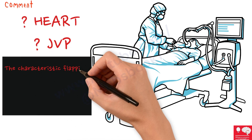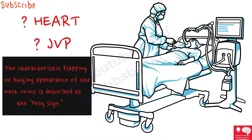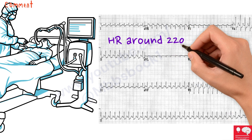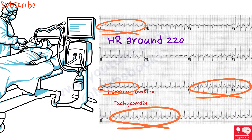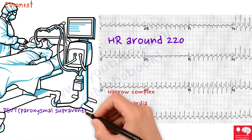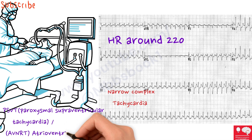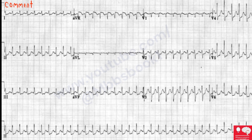The characteristic flapping or bulging appearance of the neck veins is described as the frog sign. You can notice a heart rate of around 200 and a narrow complex tachycardia with a mild ST segment depression. That mild ST depression was primarily present because of global myocardial ischemia, because the heart is beating very fast. The ECG was showing a very characteristic pattern of PSVT — paroxysmal supraventricular tachycardia, or atrioventricular nodal reentrant tachycardia.